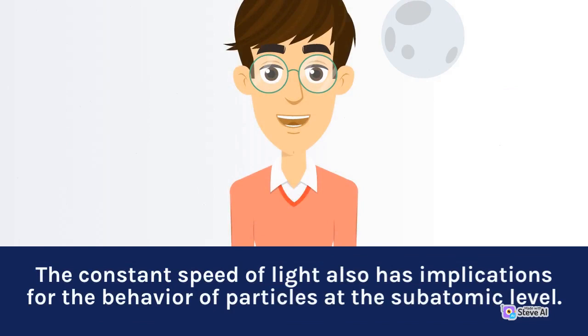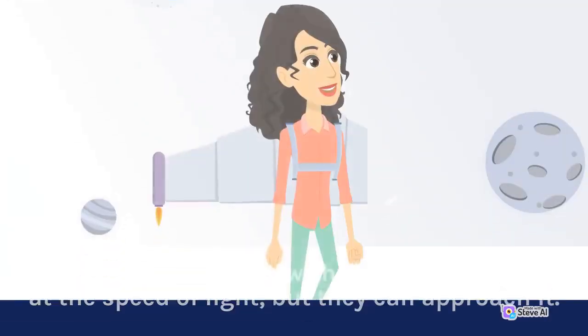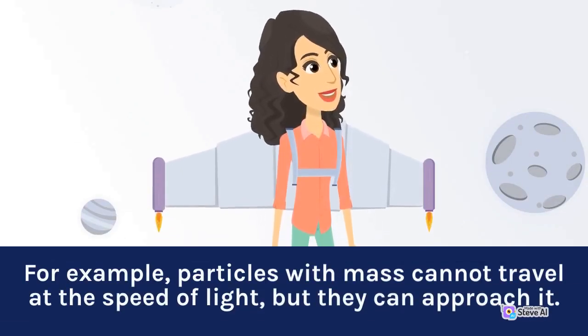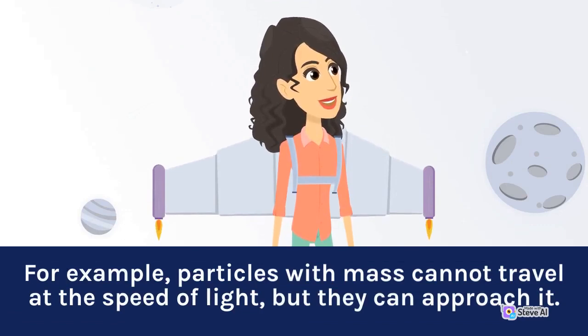The constant speed of light also has implications for the behavior of particles at the subatomic level. For example, particles with mass cannot travel at the speed of light, but they can approach it.